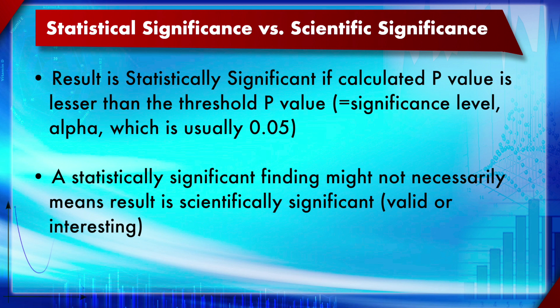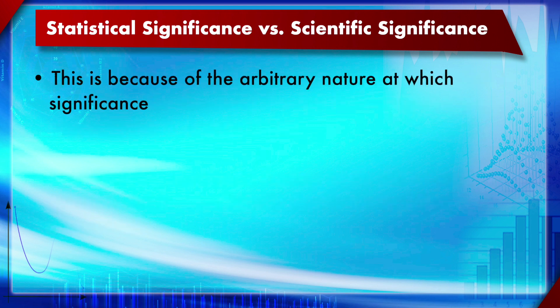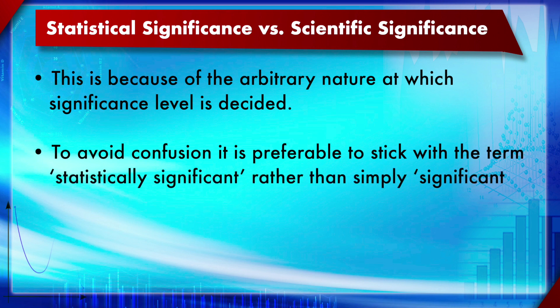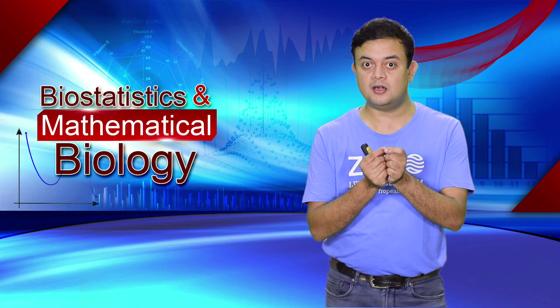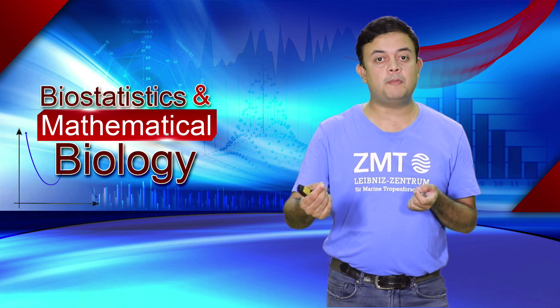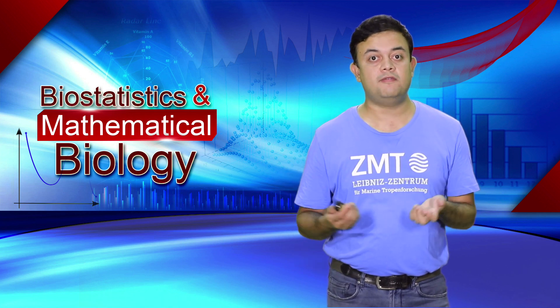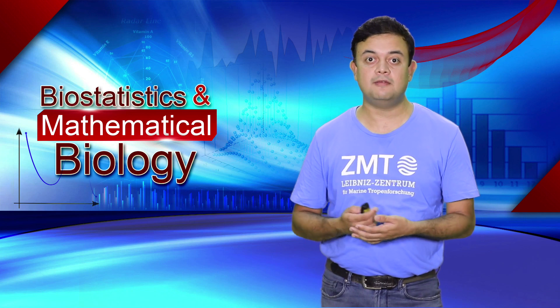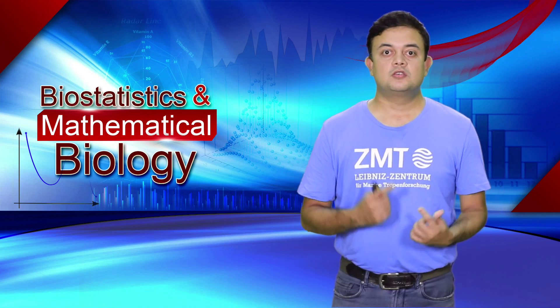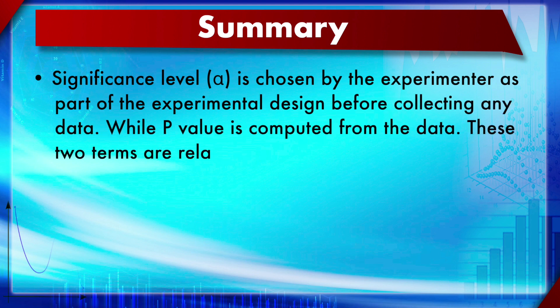This distinction arises because significance levels (0.05, 0.1, 0.01) are arbitrary. A borderline significant result has a high probability of being a false positive or artifact. To avoid confusion, it is preferable to use the term 'statistically significant' rather than simply 'significant,' since a reader might otherwise assume the result is biologically or clinically significant — which may not be the case.